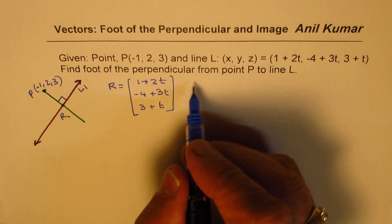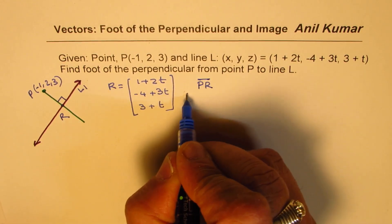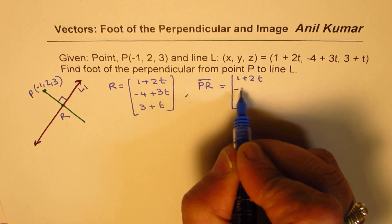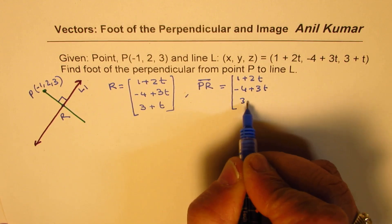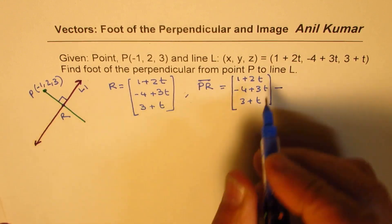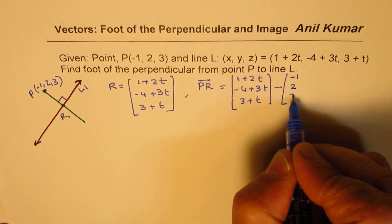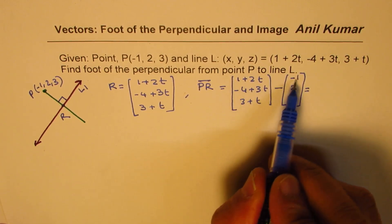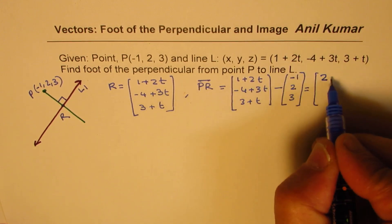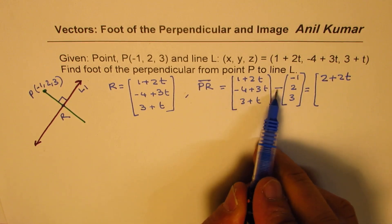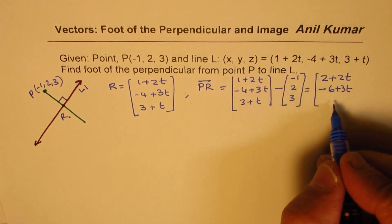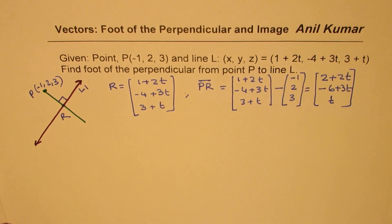From P to R, vector PR will be the R coordinates (1+2t, -4+3t, 3+t) minus the coordinates of P(-1, 2, 3). So vector PR equals (1-(-1), -4+3t-2, 3+t-3), which gives us (2+2t, -6+3t, t).